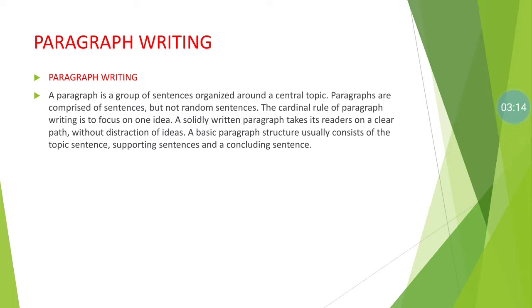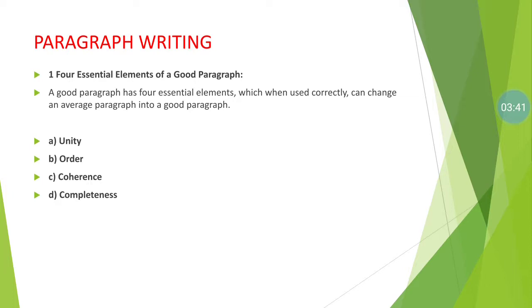While writing a paragraph, there are some elements we have to keep in mind. If we focus on these four elements, we will obviously write a proper and well-organized paragraph. A good paragraph has four essential elements which, when used correctly, can change any average paragraph into a good or proper paragraph. These four elements are: number one, unity; number two, order; number three, coherence; and number four, completeness.